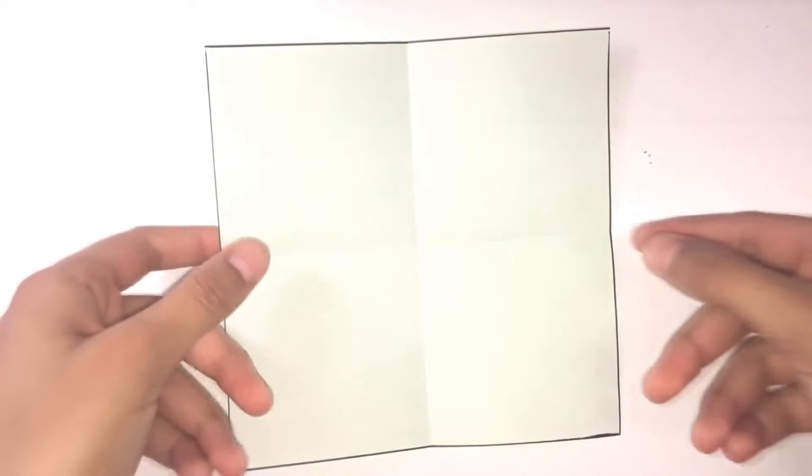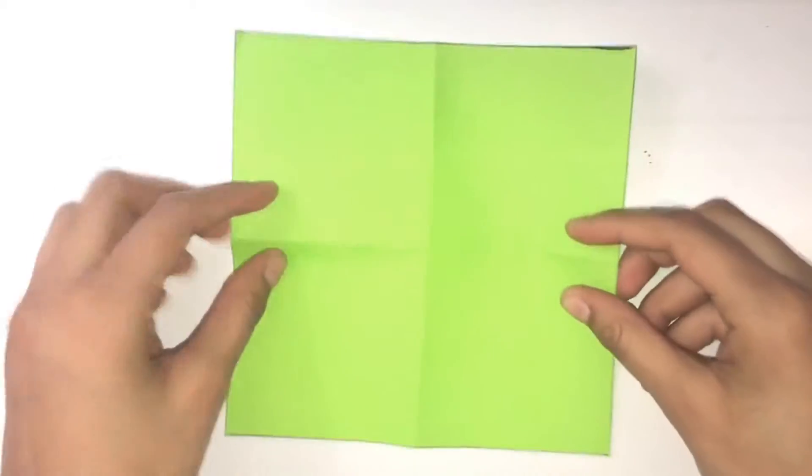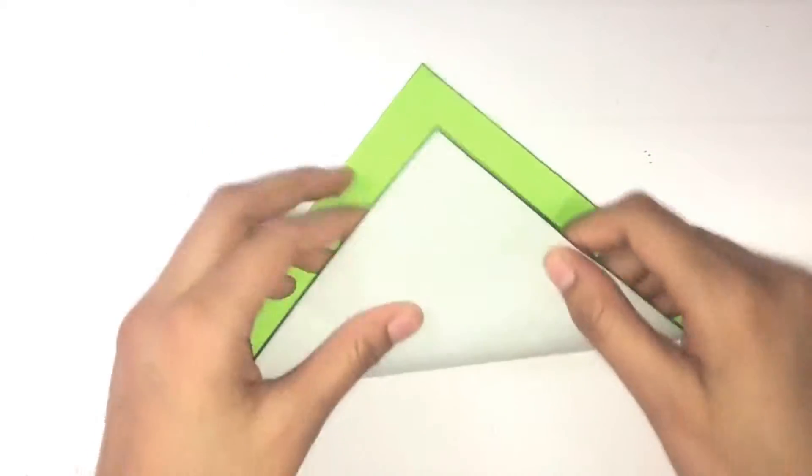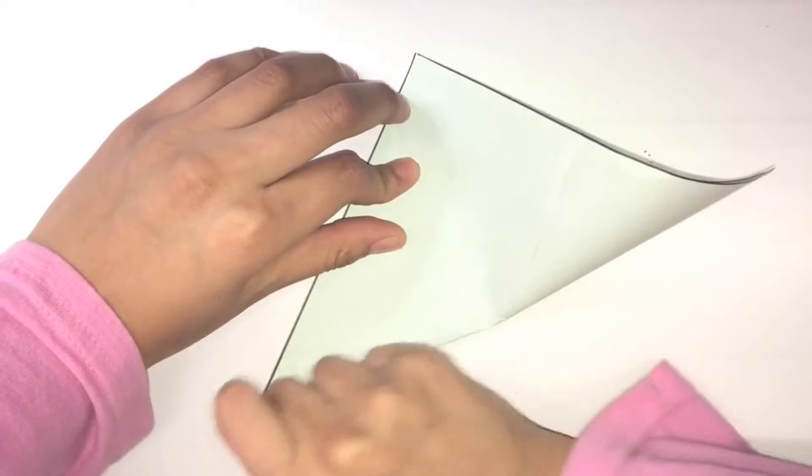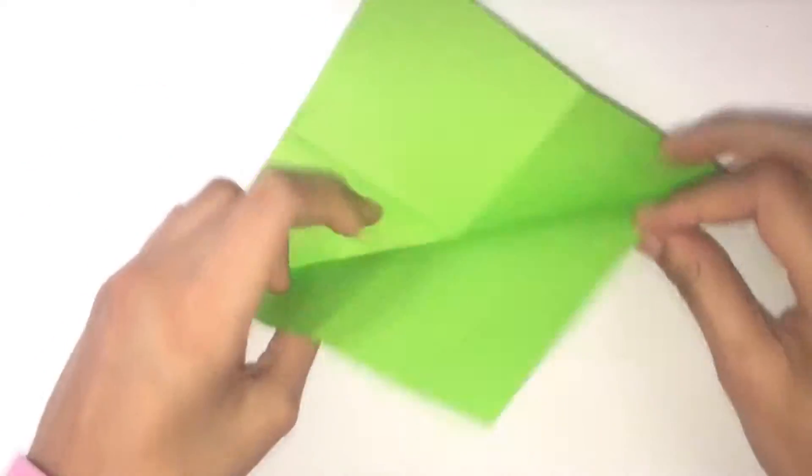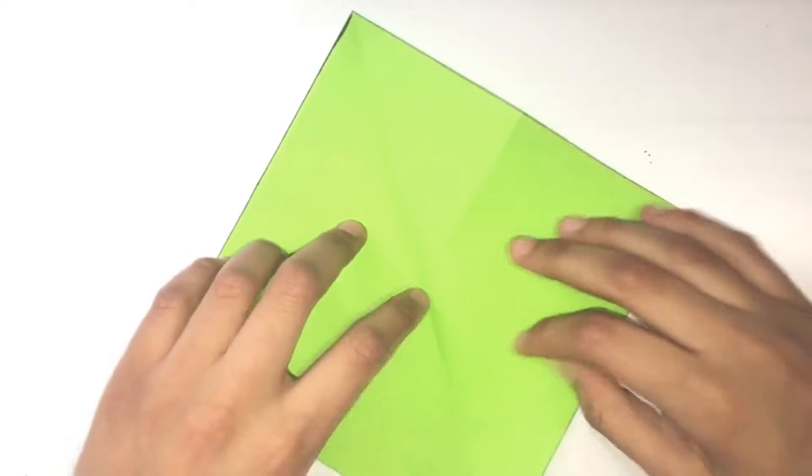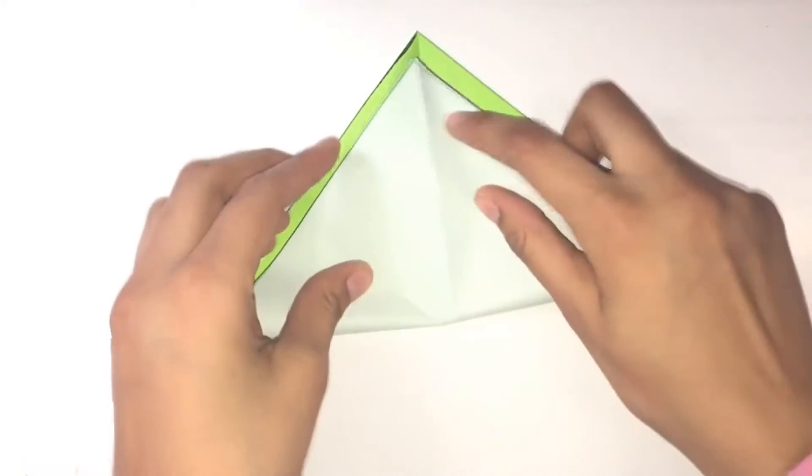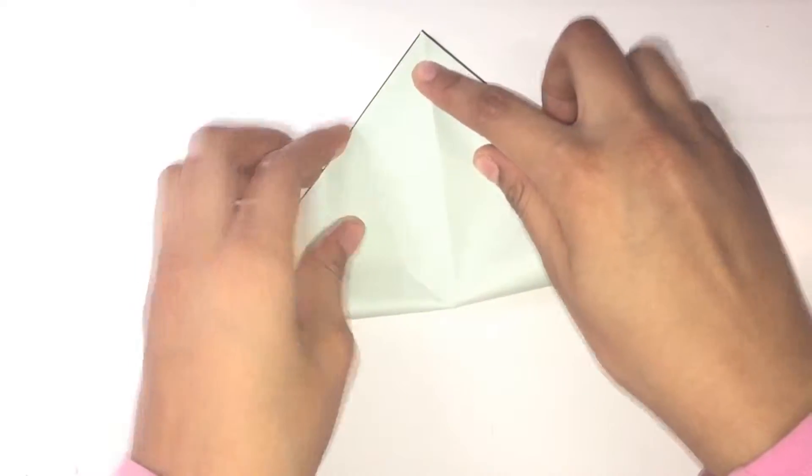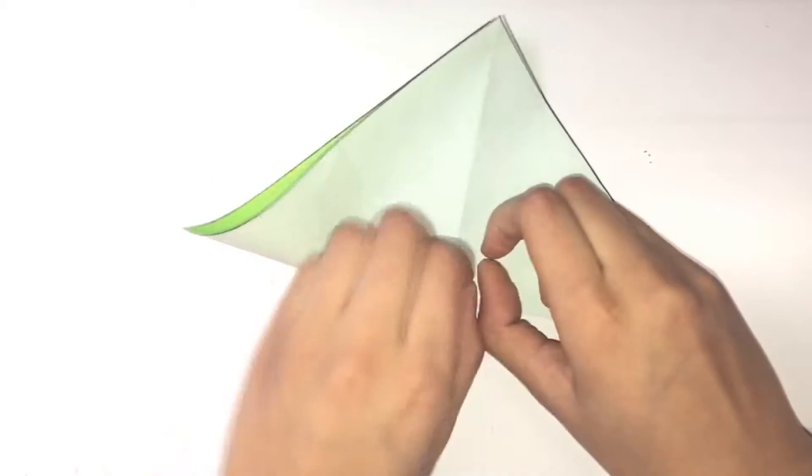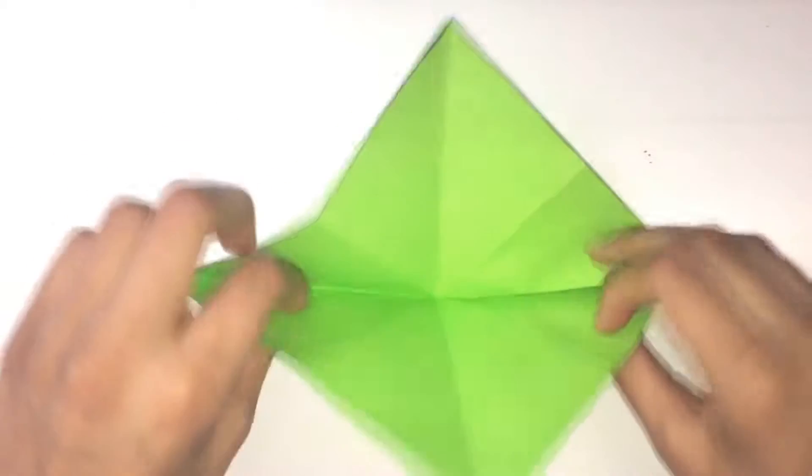I just outlined my paper in black sharpie because my lighting was blending it in with the desk. After that you want to turn it over and then fold along the diagonals.